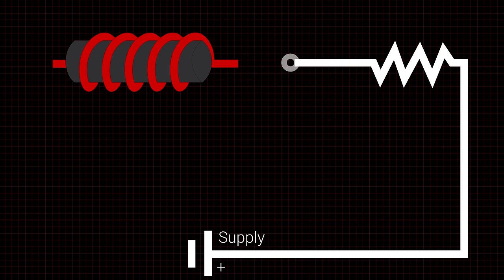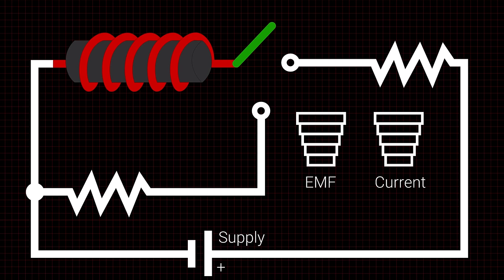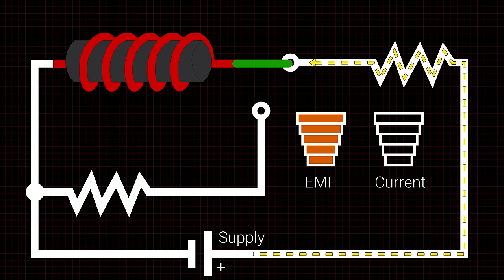When placed in an energized circuit, inductors resist the initial current flow because it is a change in current. As it resists this change, the magnetic field around the coil grows larger until finally current flows through it freely.